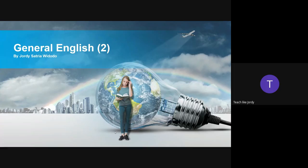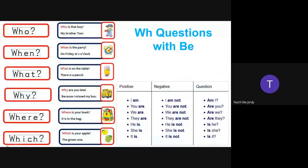Welcome everyone to General English Part 2. We are going to continue our discussions regarding last week's material. Today we are going to learn about WH questions with 'be'. WH questions include the five W's — and then also 'how' — but without the H for now.